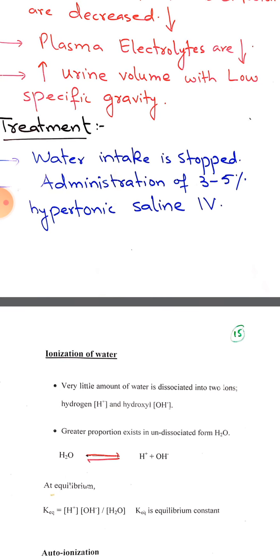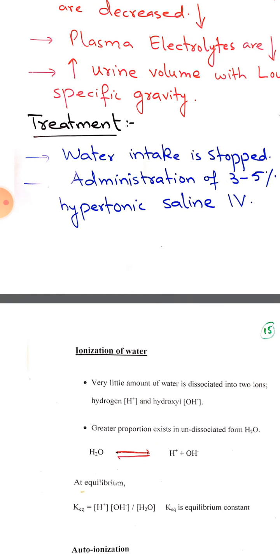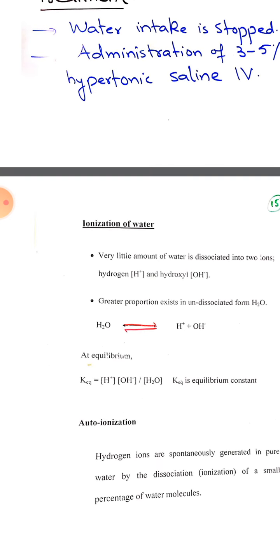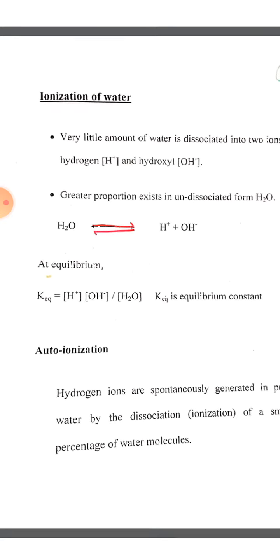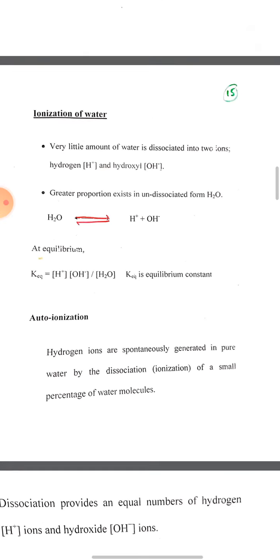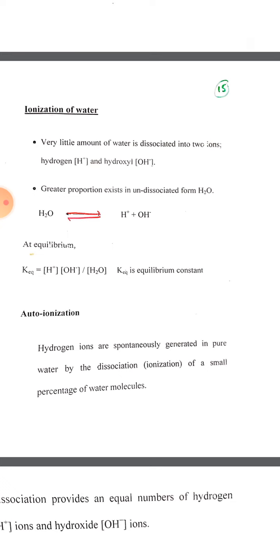We now move towards the chemical basis of pH, ionization, and buffers. Water is a neutral solvent with equal quantities of hydrogen ions and hydroxide ions. Greater amounts of water exist in undissociated molecular form (H₂O) rather than ionic form (H⁺ and OH⁻), because water is a weak electrolyte.